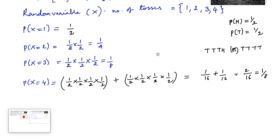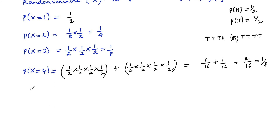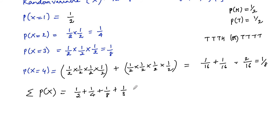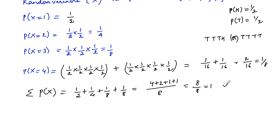We can verify by summing all probabilities: 1/2 + 1/4 + 1/8 + 1/8. Taking LCM as 8: that gives 4/8 + 2/8 + 1/8 + 1/8 = 8/8 = 1. This confirms our probability distribution is correct.